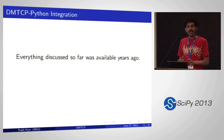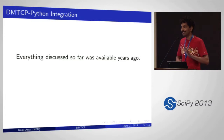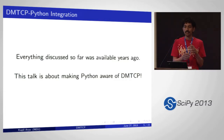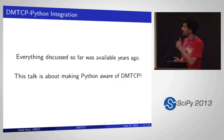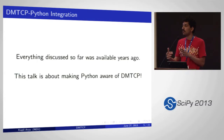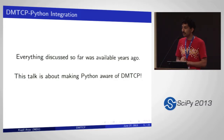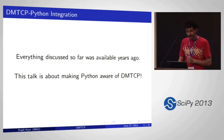What's new in this talk: everything discussed so far has been available for some years. What is new is integrating DMTCP from within Python, so that the Python programmer can tell when to create a checkpoint or when to restart from a previous checkpoint. In the earlier demo we checkpointed from the outside, so you don't have control over where exactly you want to create the checkpoint. Being able to use it from within Python — that's what this is all about.